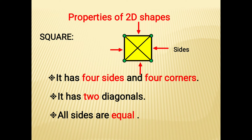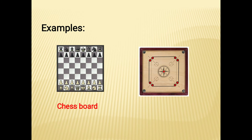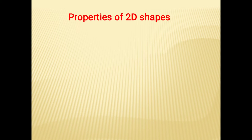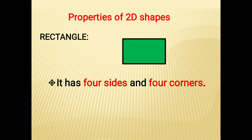All four sides of a square are of equal length. Examples of a square are a chess board and a carom board. The next shape is the rectangle. This is a rectangle — it has four sides.